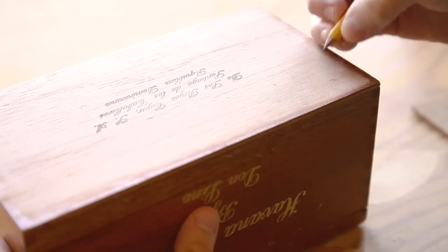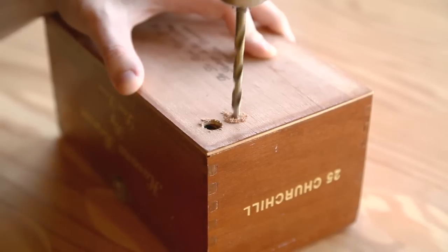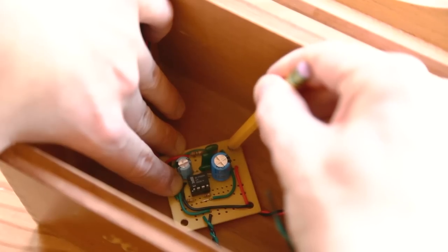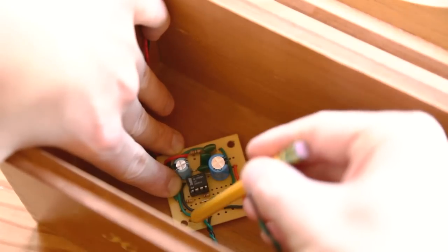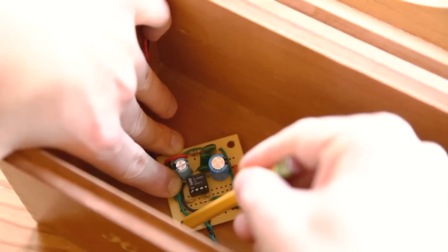Then mark and drill holes for the power jack and audio jack in the corner on the back of the box. Place the circuit board inside the box near the jacks, then mark and drill the mounting holes, which correspond to two of the corner holes on the circuit board.